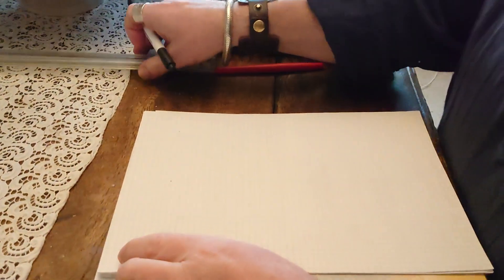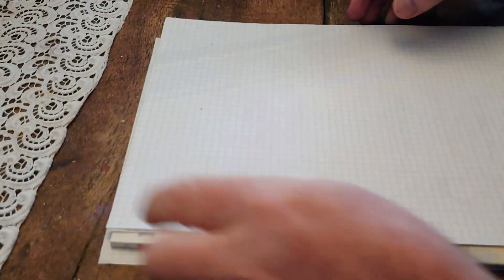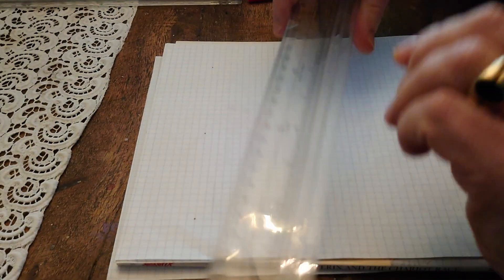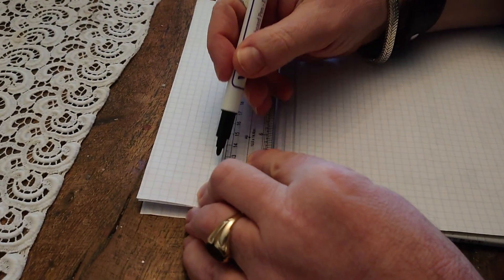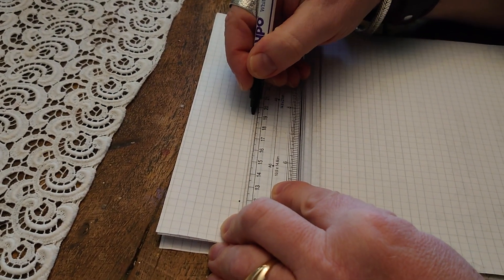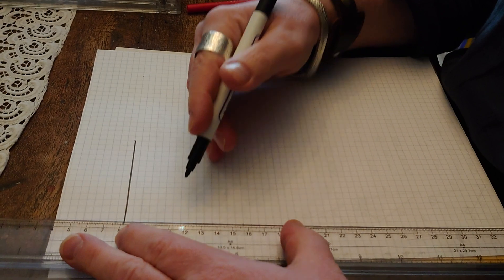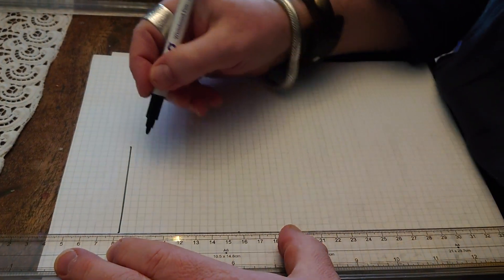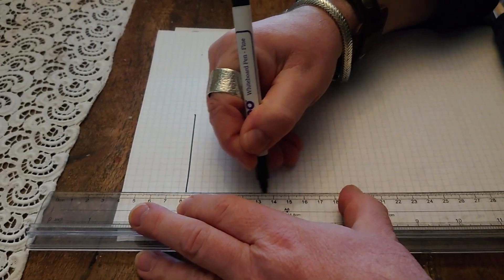So here we go. I've got some graph paper which I've acquired from Mr. Roberts' classroom. Thank you, Mr. Roberts. On the graph paper, I'm going to draw a straight line. From the corner of the straight line, we'll go 15 squares horizontally (or across) and 15 squares vertically (up and down).